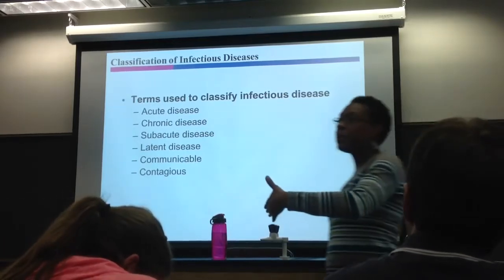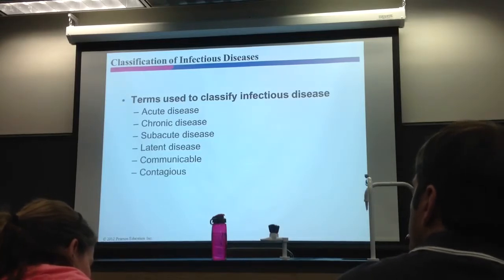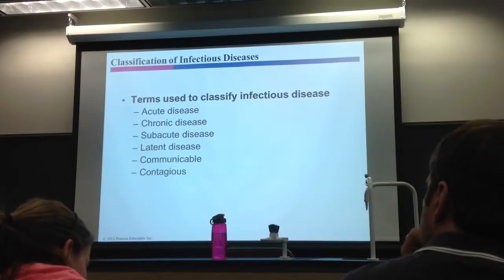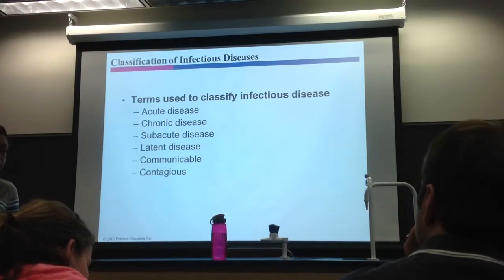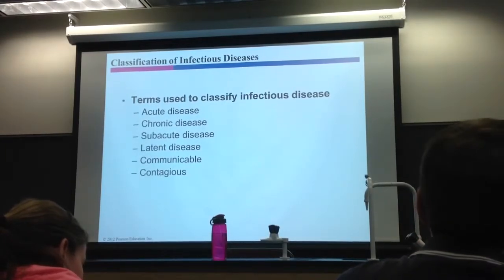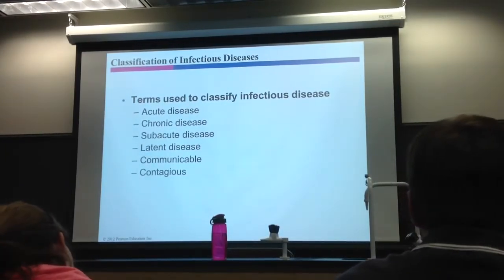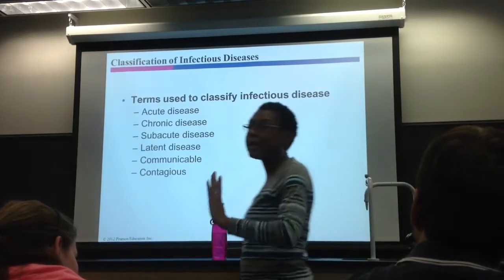A chronic disease has a long incubation period. The symptoms are typically not severe — though there are always exceptions — and they last a long time. Acute is over in a day or two; chronic has a long incubation period, symptoms that aren't severe, but it lasts a long time. Think TB, leprosy, hepatitis — all chronic, lasting a long time.